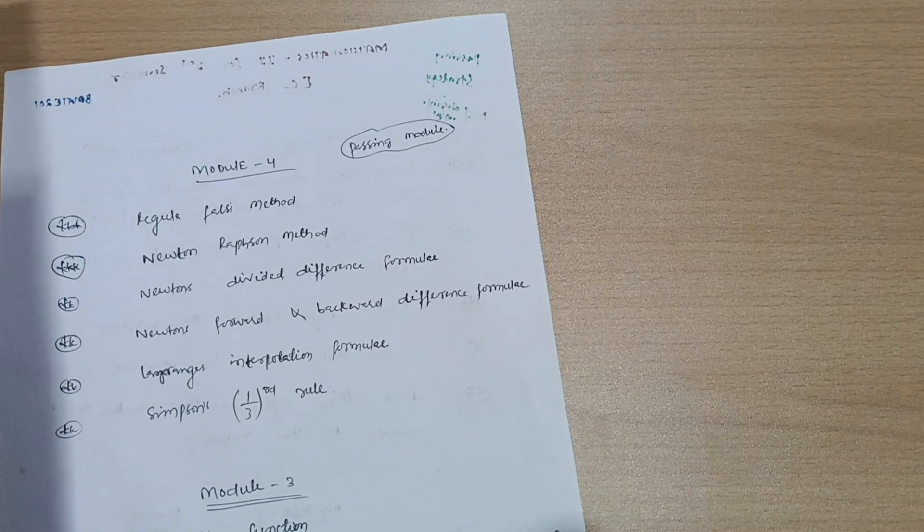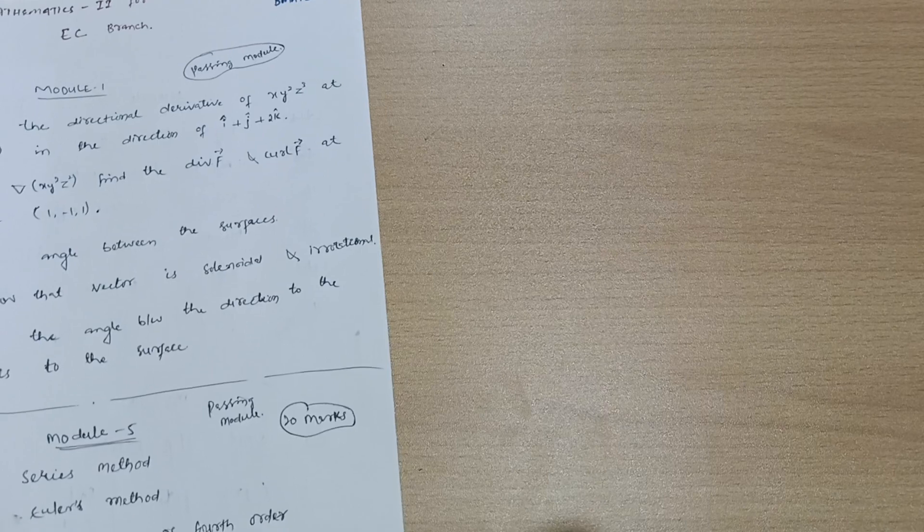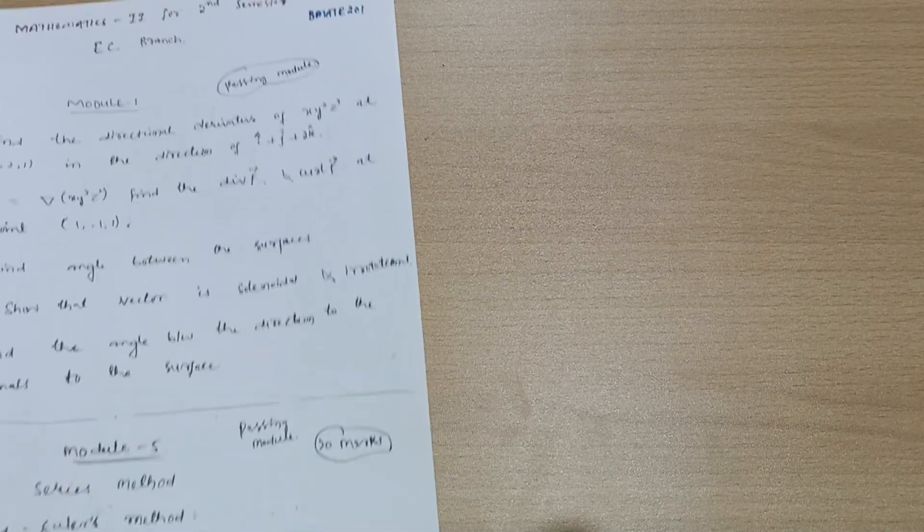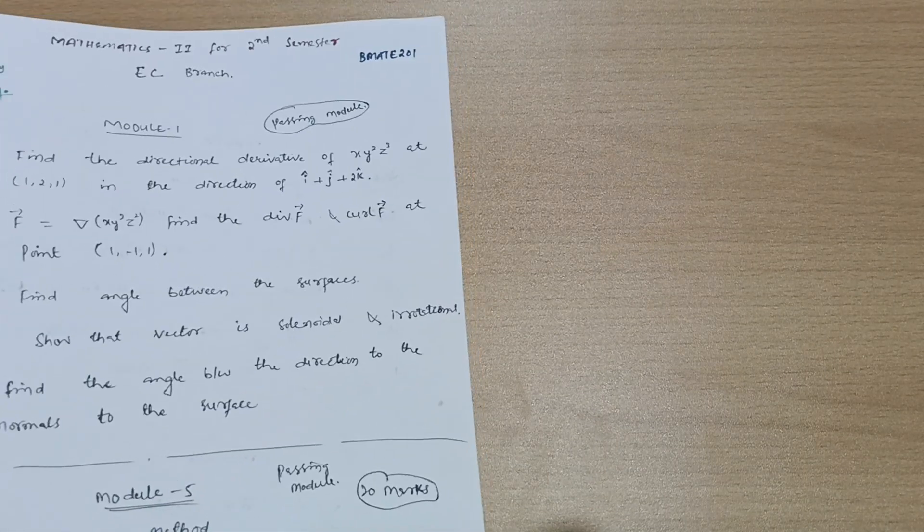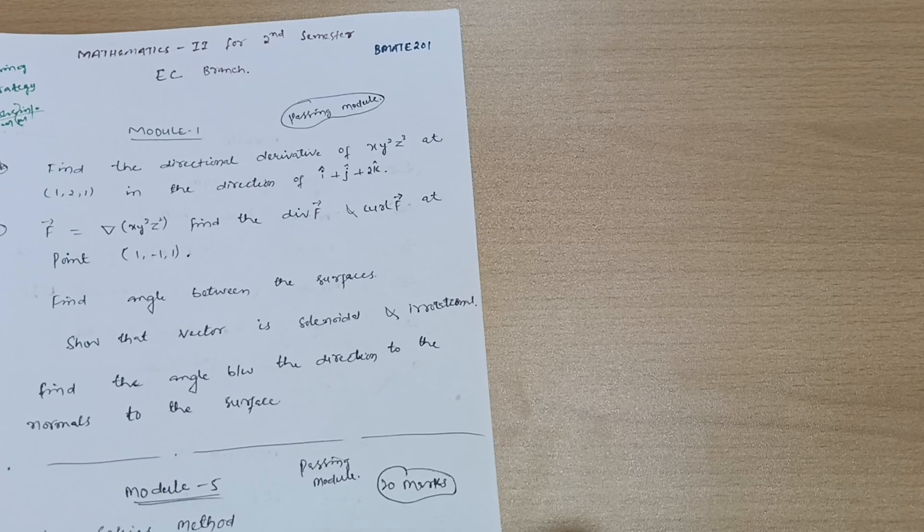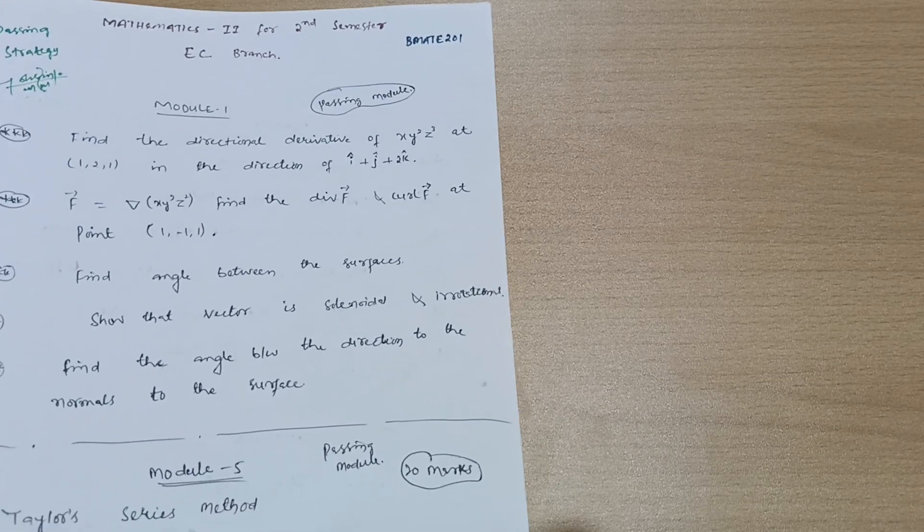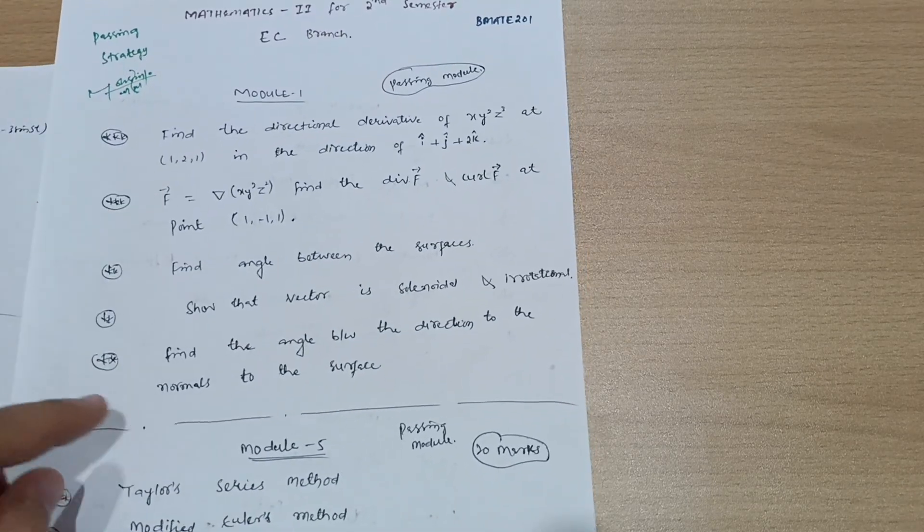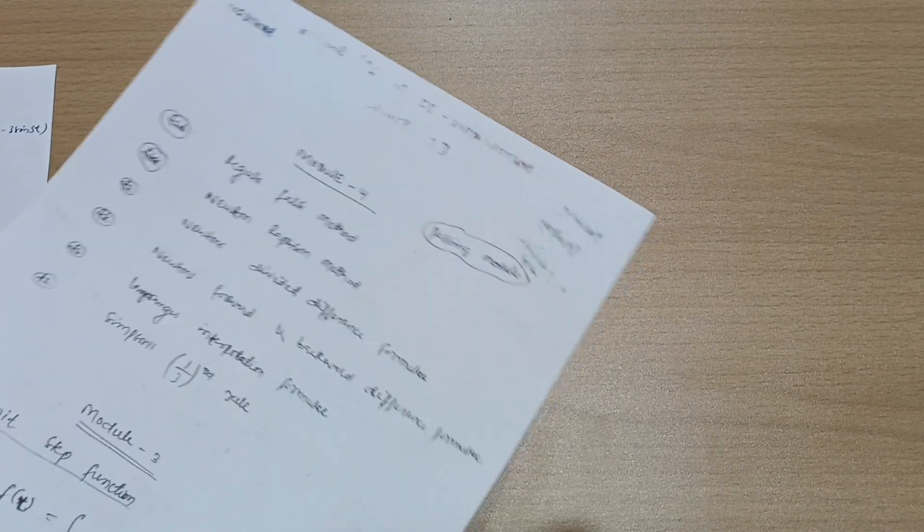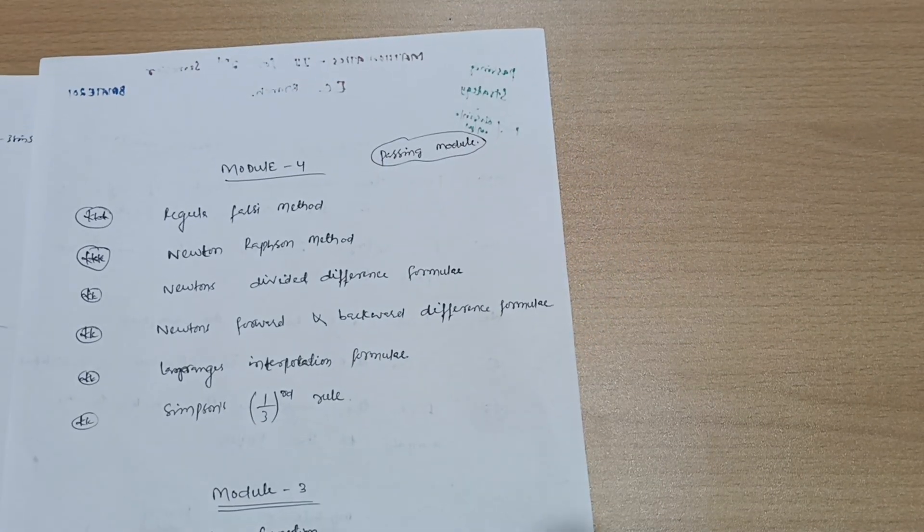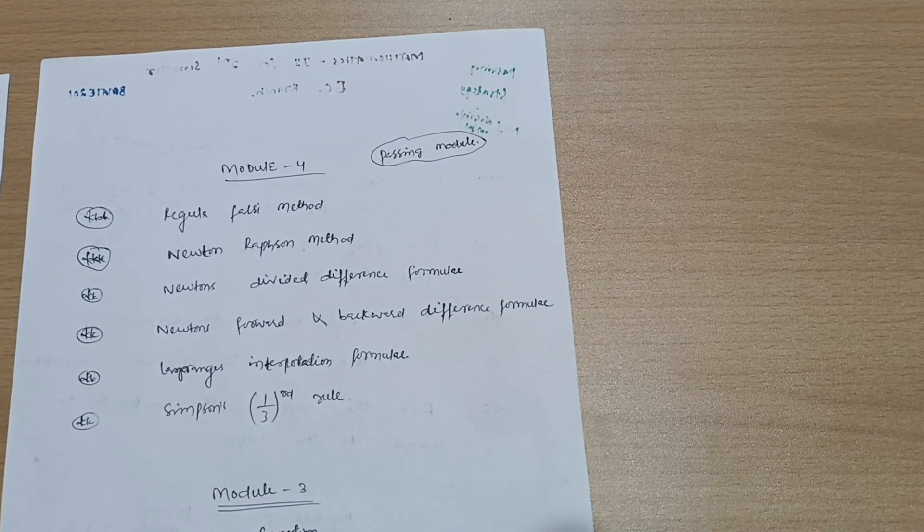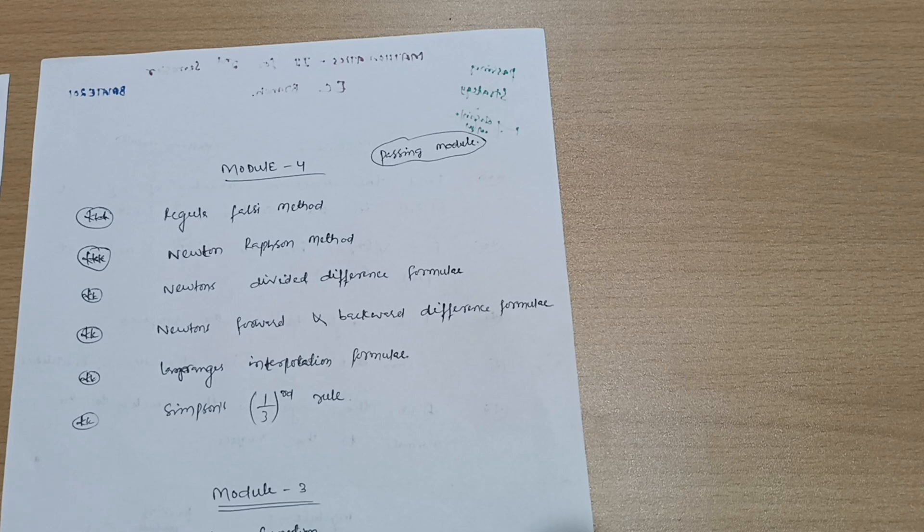These two modules are super modules - module four and module five. You should easily get 40 marks from these. You should attempt all questions; there's no question of leaving any topic as this becomes the passing package. If you cover three modules fully, you'll easily pass mathematics. But in the worst case, if the paper is somehow unexpected, you have to go through other modules also.